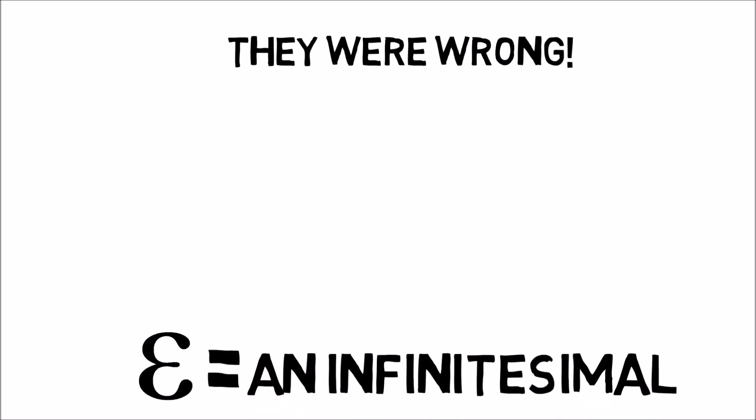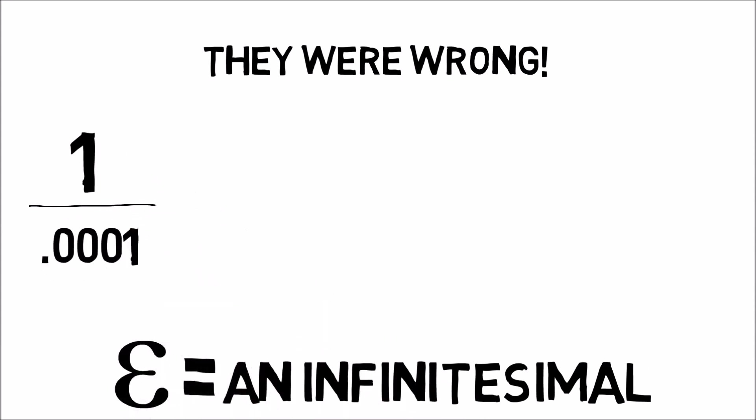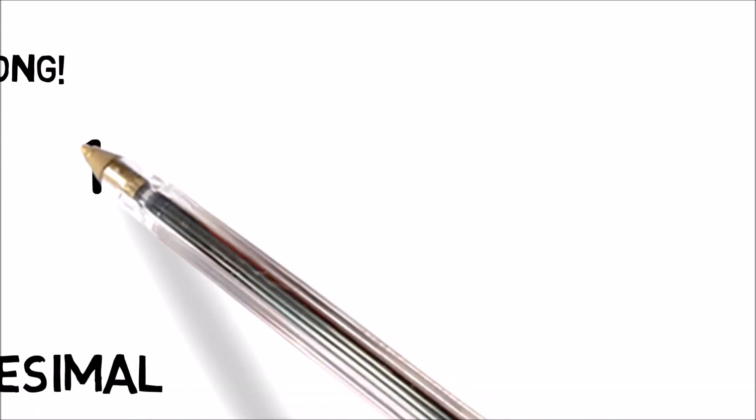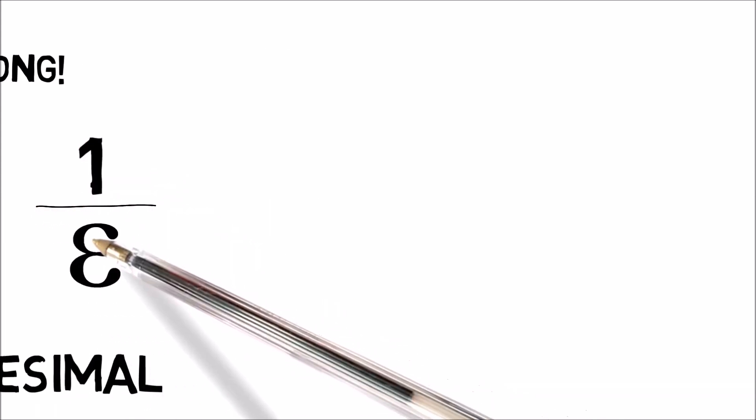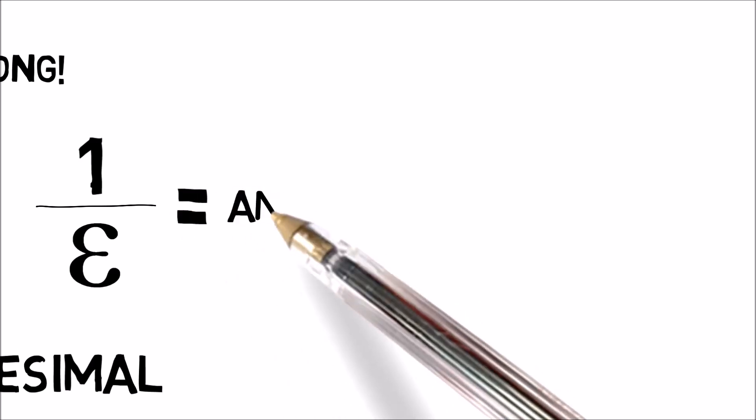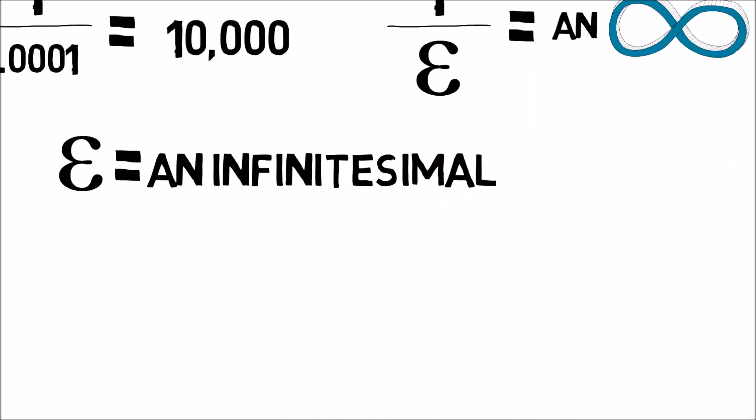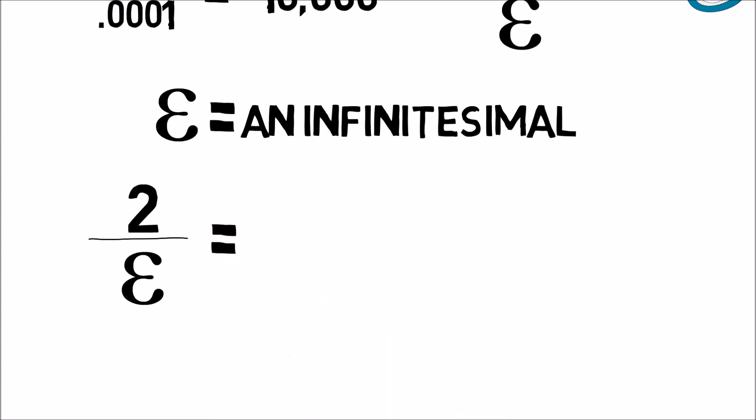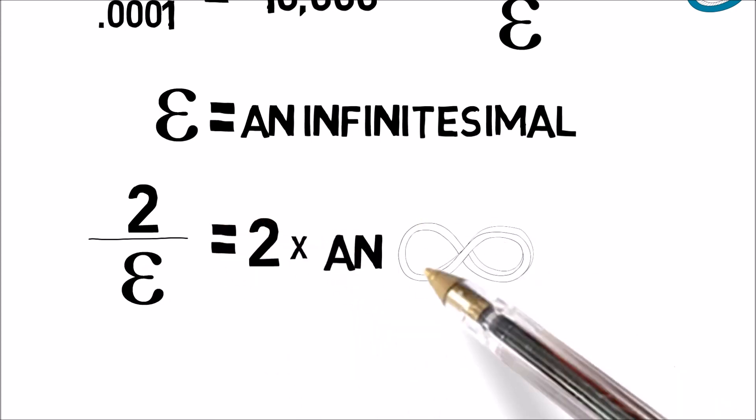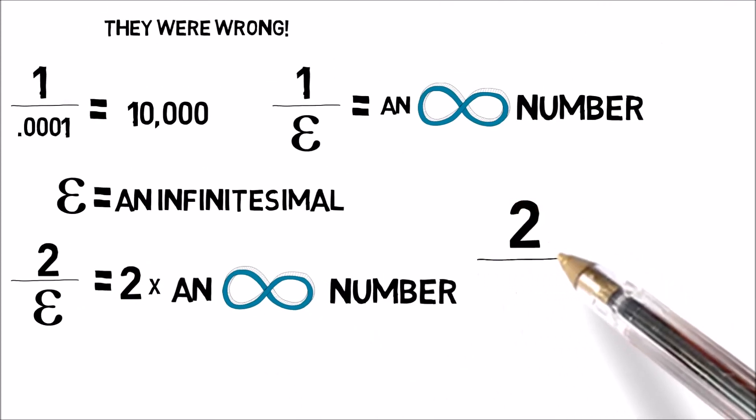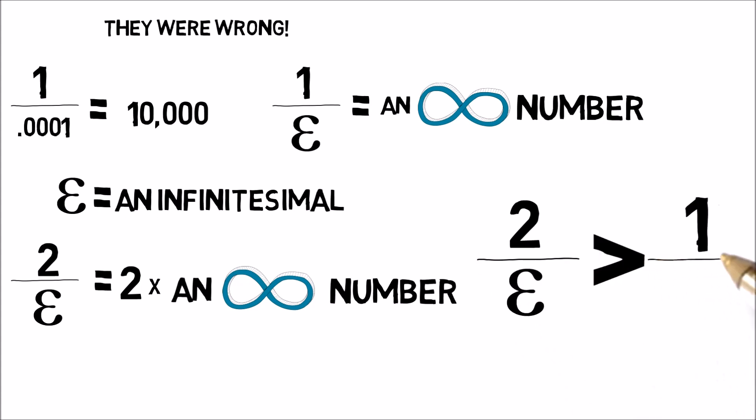Epsilon is an infinitesimal. And you know that one divided by a really small number is a larger number. So what happens if we take one and divide it by epsilon? We get an infinitely large number. What happens if we multiply epsilon by two on the bottom? Well, we get an even larger infinite number. So in the end, two times infinity is bigger than infinity.